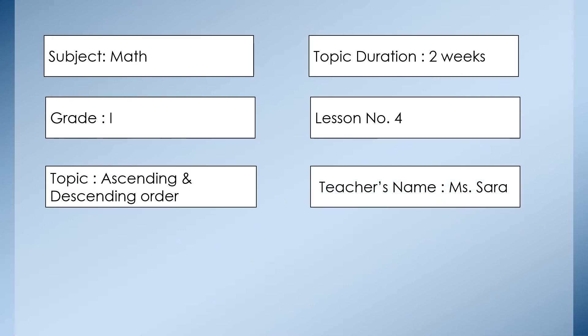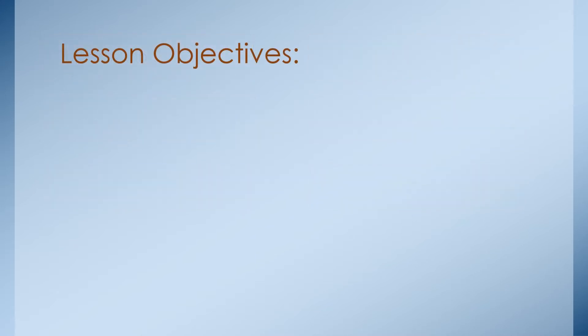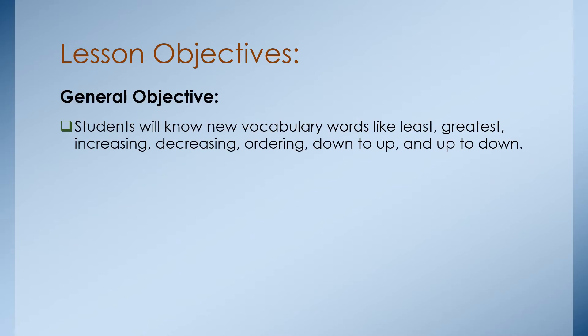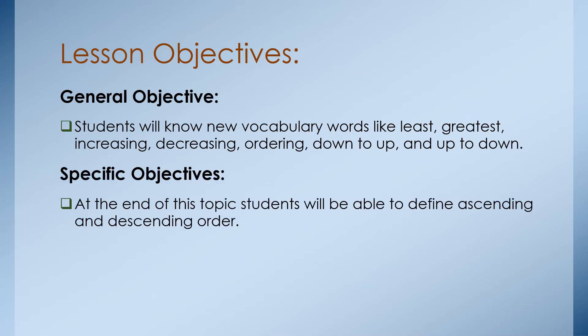Also include the teacher's name. The first step of your lesson plan is the lesson objectives, or learning objectives. The general objectives: students will know new vocabulary words like least, greatest, increasing, decreasing, ordering, down to up, and up to down.